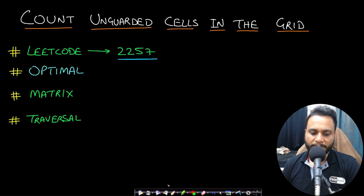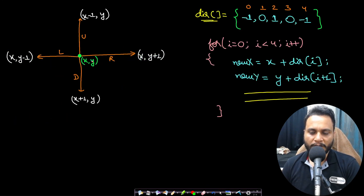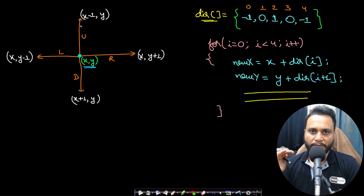You can solve the problem by simple iteration or by applying depth-first search or recursion. To understand direction, if you are currently at coordinate (x, y) and want to go up by one cell, your row number decreases by 1 while the column stays the same. So you are adding -1 to the row and 0 to the column.